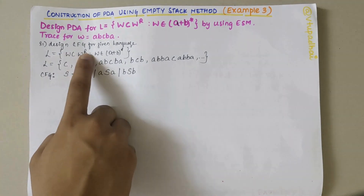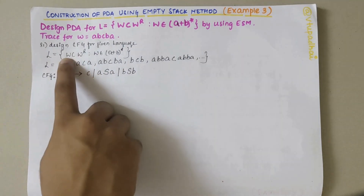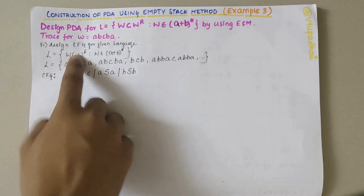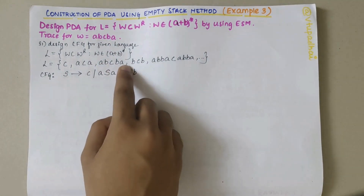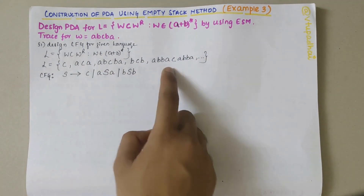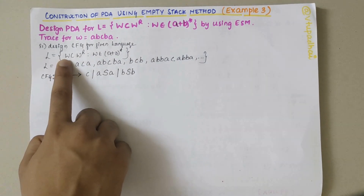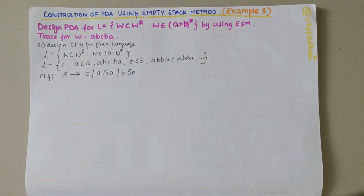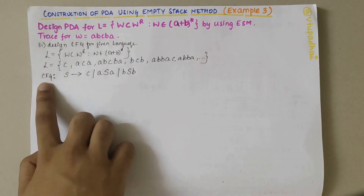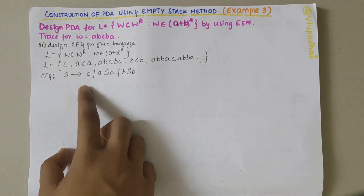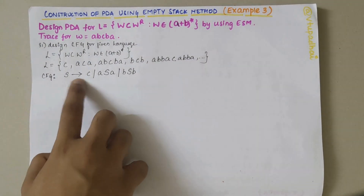If W is empty, we get only C. If W is 'a', we get 'aca'. If W is 'ab', then the string is 'abcba' — C in the middle and mirror image BA on the other side. If W is 'b', we get 'bcb'. If W is 'abba', we get 'abbacabba'. Now I'll define the CFG, having already covered CFG design in previous videos.